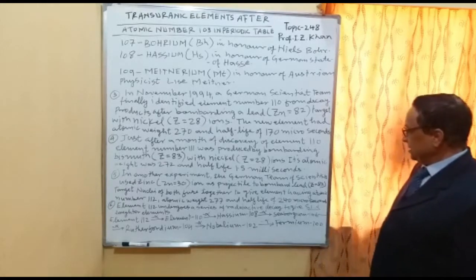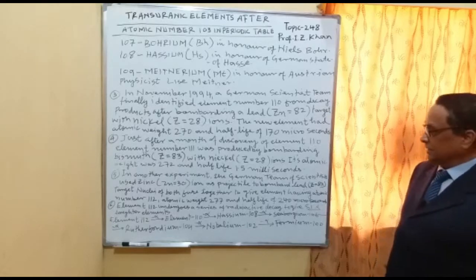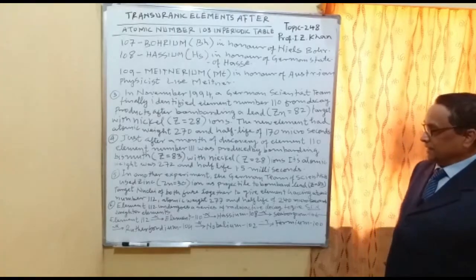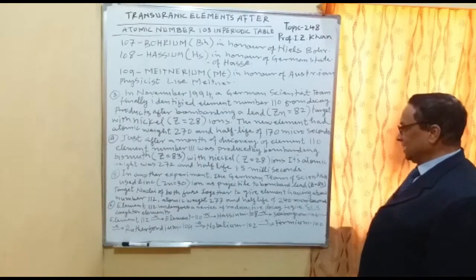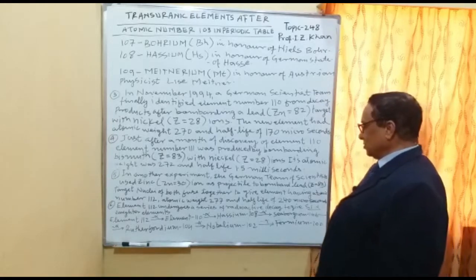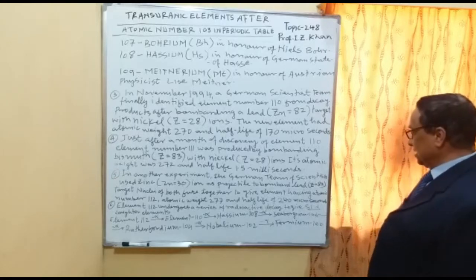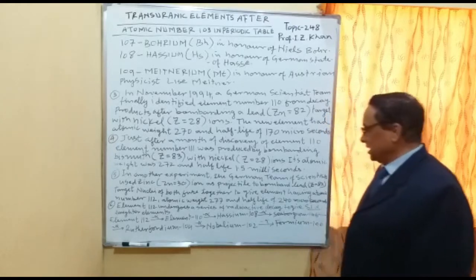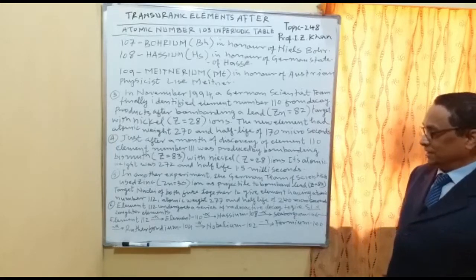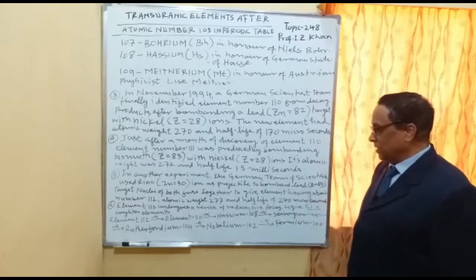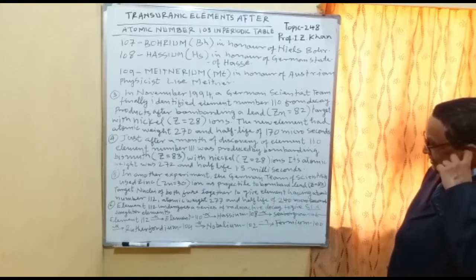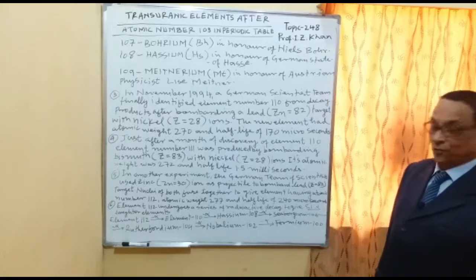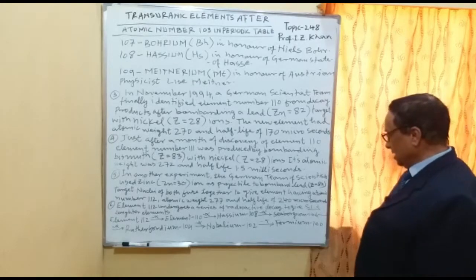In another experiment, the German team used zinc (Z=30) ions as a projectile to bombard a lead (Z=82) target nucleus. Both fused together to give an element with atomic number 112, atomic weight 277, and a half-life of 240 microseconds. Element 112 undergoes a series of radioactive alpha decays, producing: element 110, then Hassium-108, then Seaborgium-106, then Rutherfordium-104, then Nobelium-102, and finally Fermium-100.